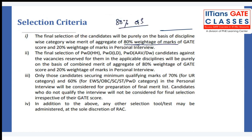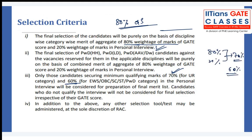80% weightage is given to the GATE score and 20% weightage to the personal interview (PI). Candidates must secure minimum qualifying marks: 70% for General category and 60% for reserved candidates out of the combined 80+20 percent, to be considered for the final merit list. In addition, at the sole discretion of RAC, a selection test may also be administered — so they might conduct an additional test depending on the situation.